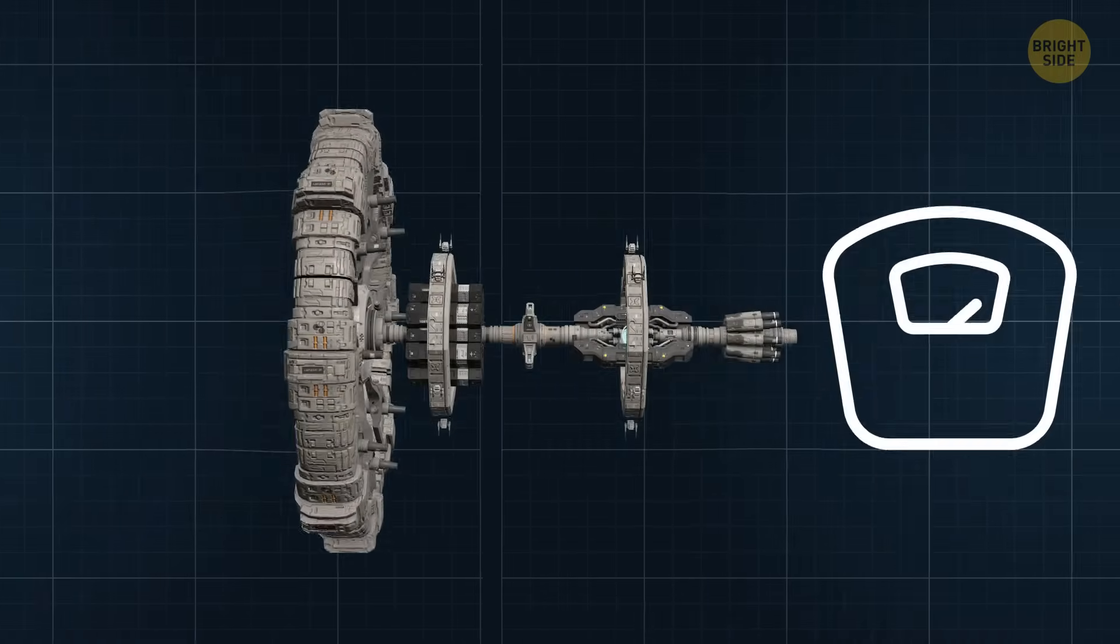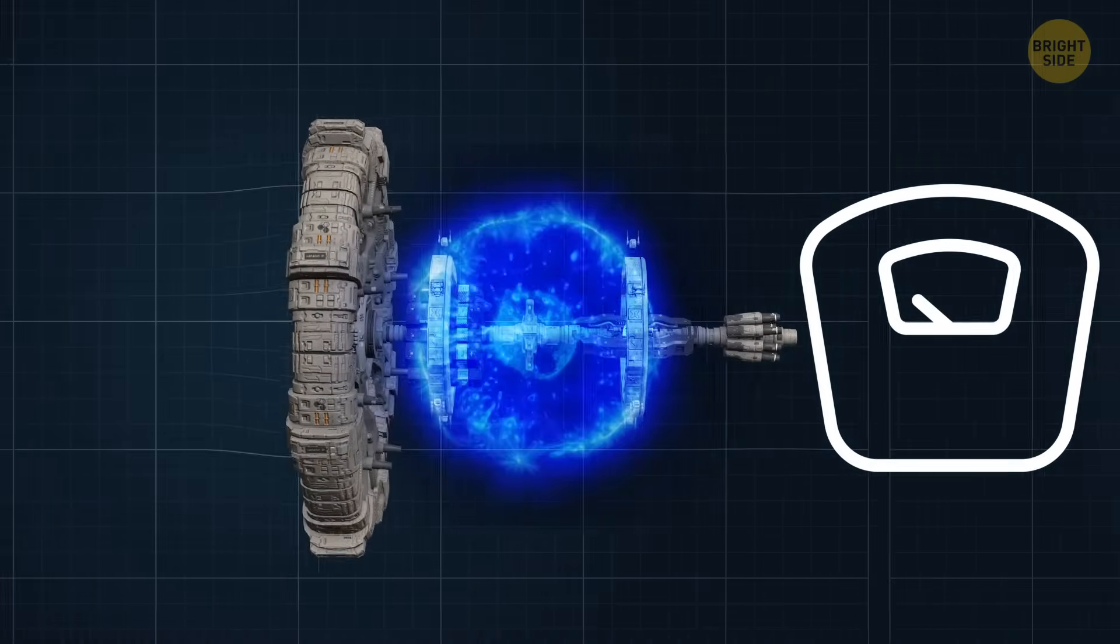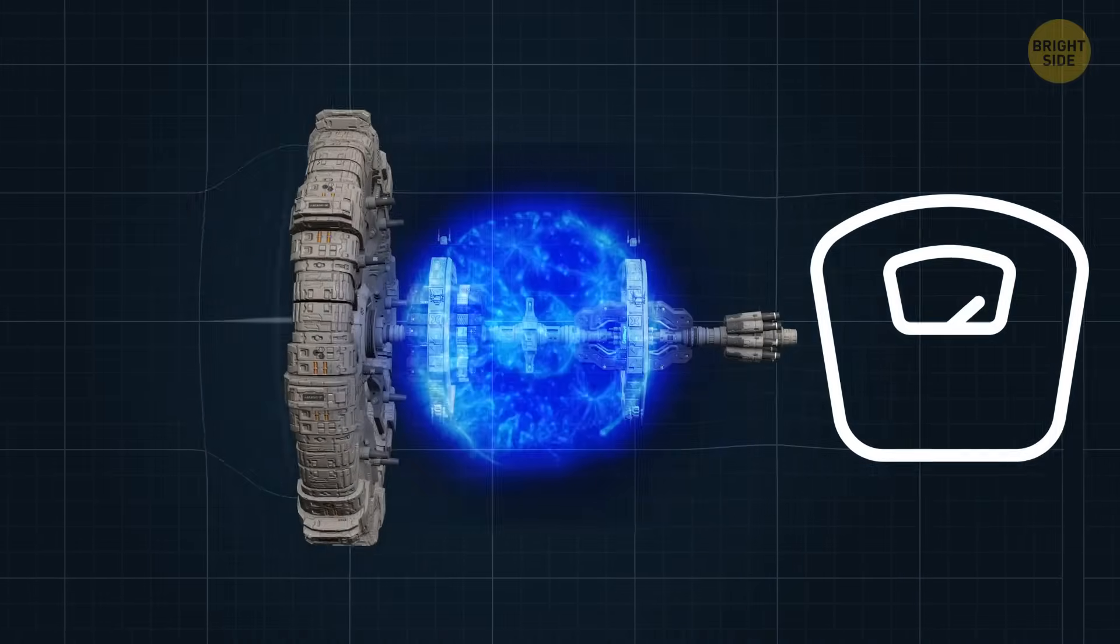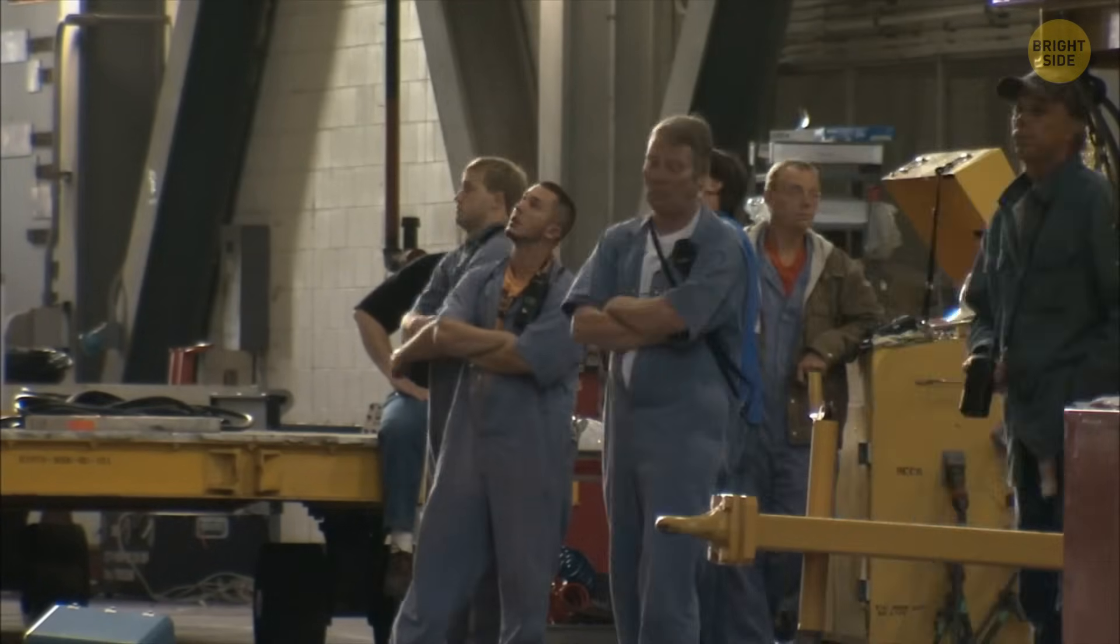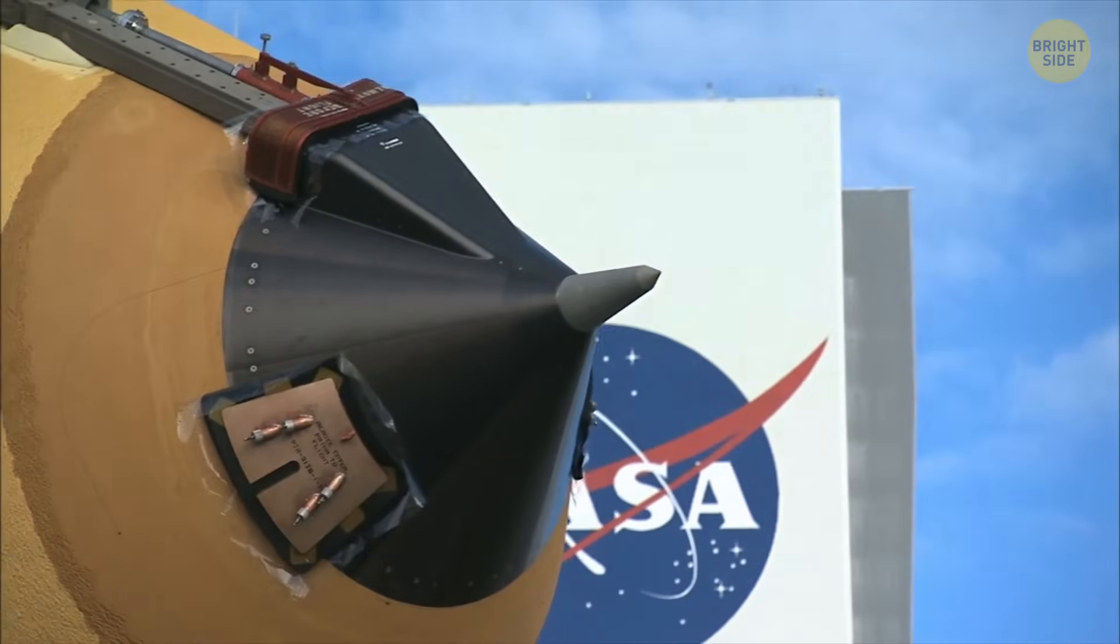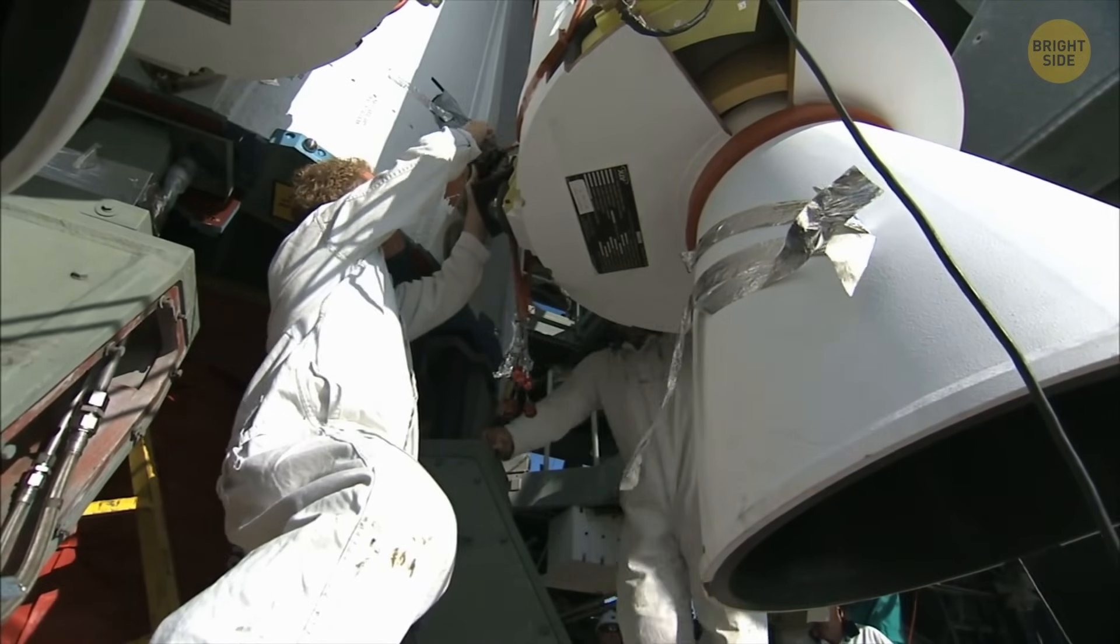But many scientists think we couldn't realistically build the Alcubierre Drive. It needs way too much mass and theoretical negative energy. It would make it impossible to construct a real warp system. NASA has been poking at the idea for years, trying to see if a physical warp drive is feasible, but so far, no major breakthroughs have come from it.